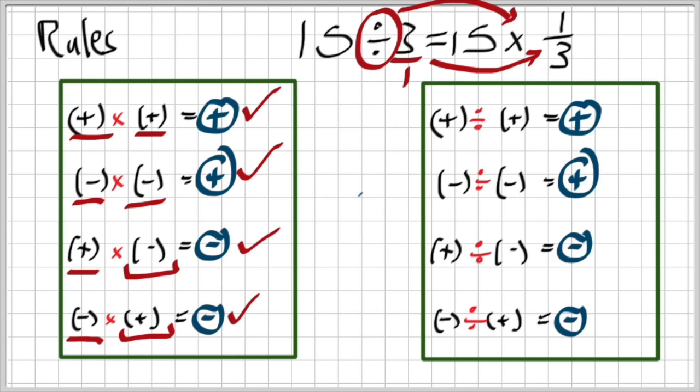If you didn't see the previous video, please go and watch that video first. The basics: if I'm multiplying or dividing the same signs, the answer is going to be positive. The moment that the signs are different, the answer is going to be negative.